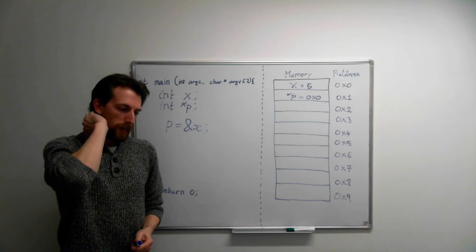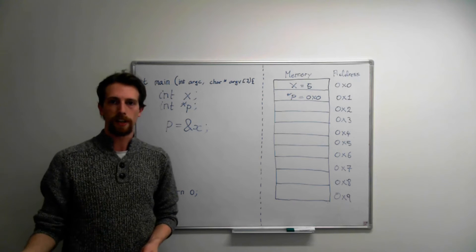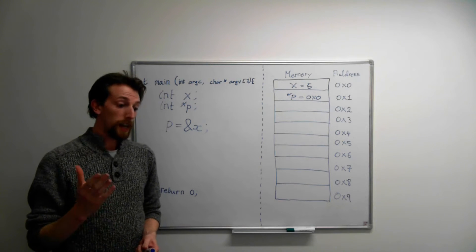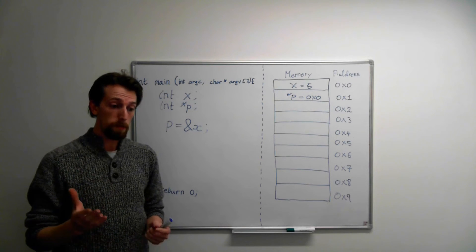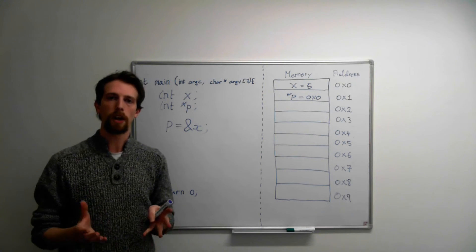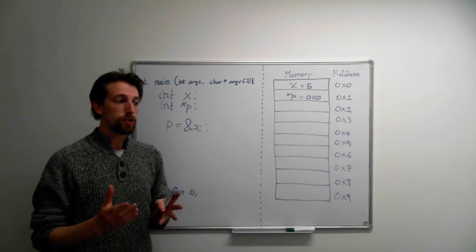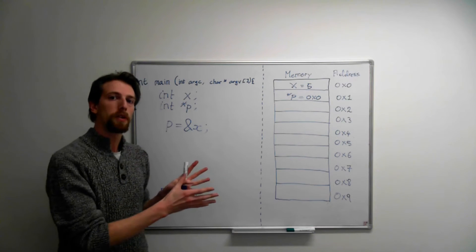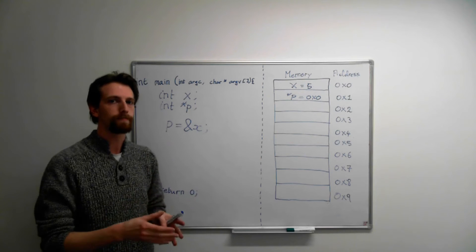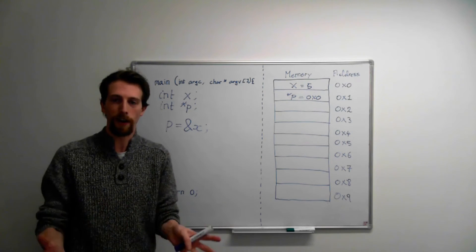Where we typically tend to use pointers is when we're dealing with a thing called dynamic memory allocation. Dynamic memory allocation is basically when we don't know how much memory our program is going to need when we run it. So we figure it out. And then we tell the computer, listen, I need enough space to store 10 integers. Can you find that space and give it to me?